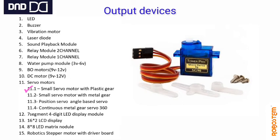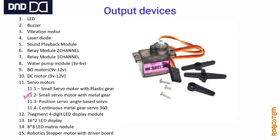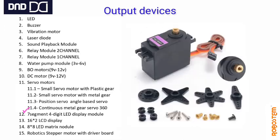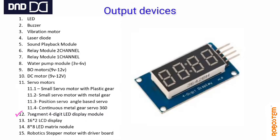There are different servo motors: first, small size with plastic gear; second, small size with metal gear; third, positional servo with angle control. There is also a continuous rotation servo. These are output accessories. The 7-segment LED display is also available.